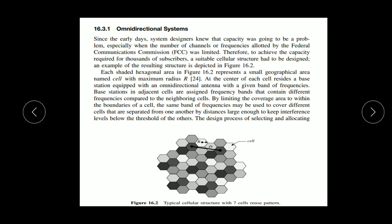Therefore, to achieve the capacity required for thousands of subscribers, a suitable cellular structure had to be designed. As shown in figure 16.2, each shaded hexagonal area represents a small geographical area named a cell, with maximum radius R. At the center of each cell resides a base station with an omnidirectional antenna that radiates in all directions.